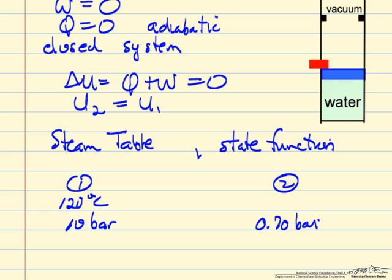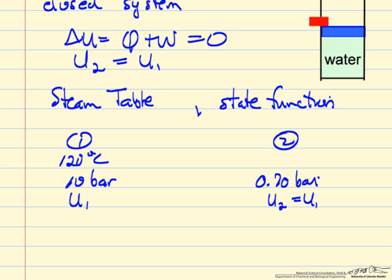But we know that U2 is equal to U1. So if we can find U1 here, then U2 is going to be U1, and we would have two properties. So this would correspond to a unique value.